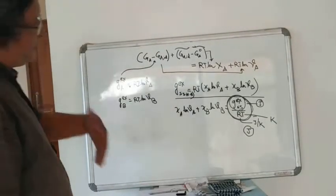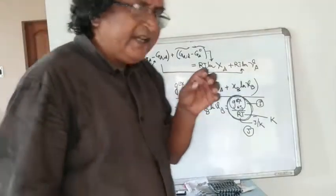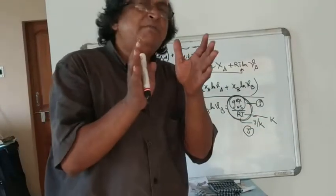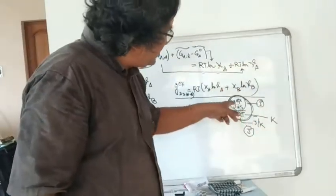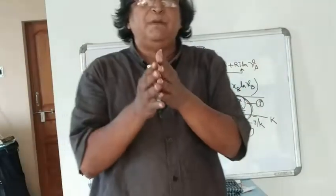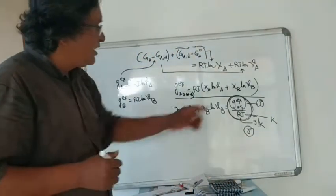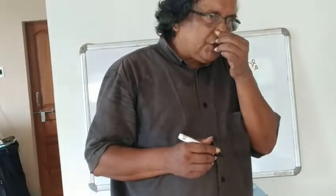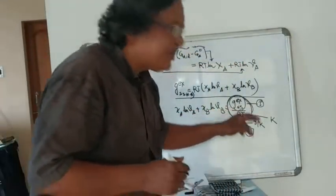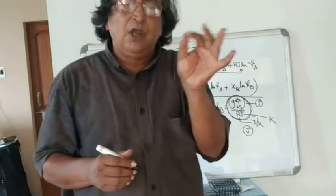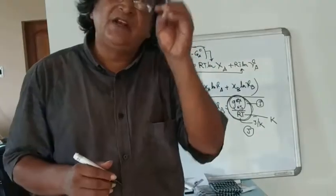If we proceed a little further, we will talk about this term in a very simple way. This can be made very complicated — for sub-regular solution models the equation becomes more complex; for multi-component three or four-component systems the equations become even more complex. What happens is the complexity is not the problem, but as the equations become more complicated you tend not to see through them. So we will restrict ourselves to a simple binary excess mixing using the simplest model, called the regular solution model.